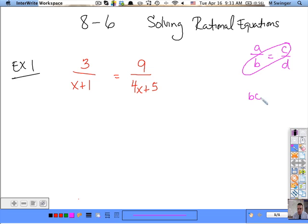So B times C should equal A times D. These two are equal to each other. So basically it's cross multiplying.